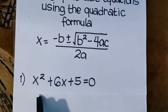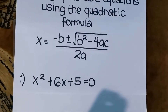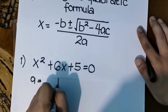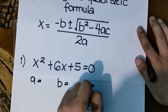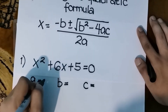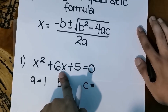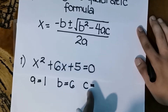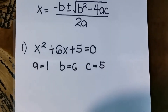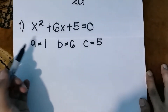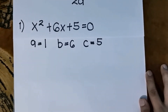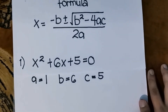Make sure that our given equation is in general form so we can easily identify a, b, and c. Our a — the coefficient of x² — is 1. Our b is 6, and our c is 5. So those are the values of a, b, and c. And then we just substitute them into our quadratic formula.